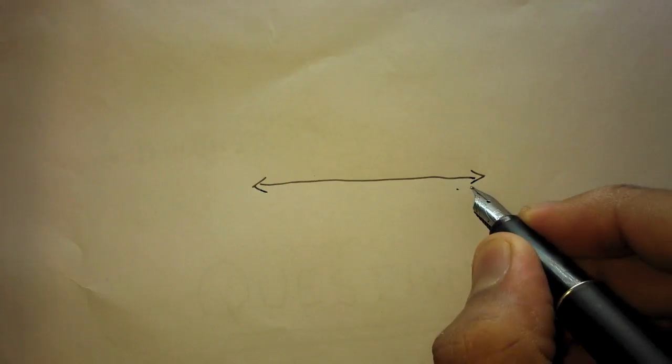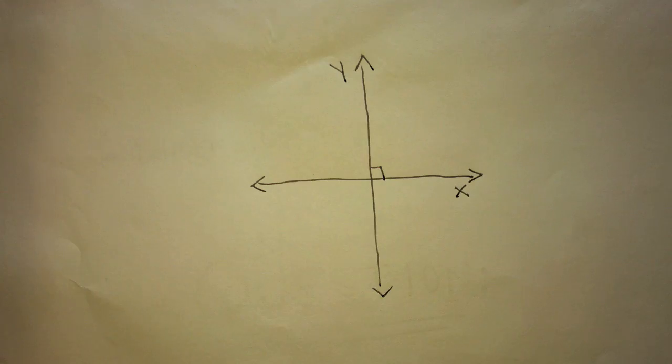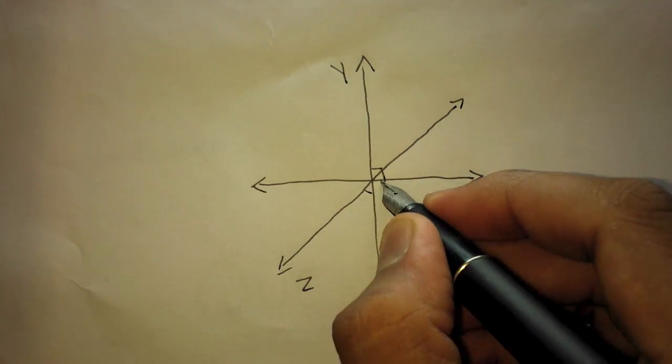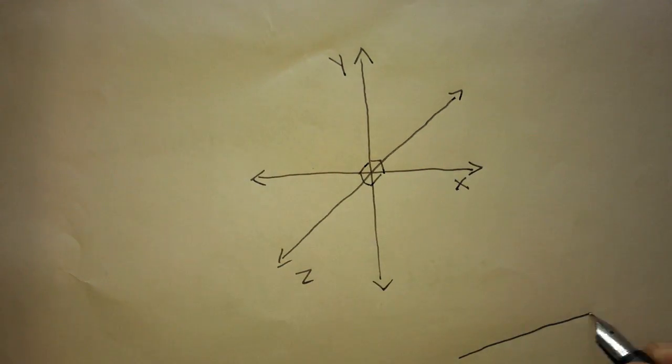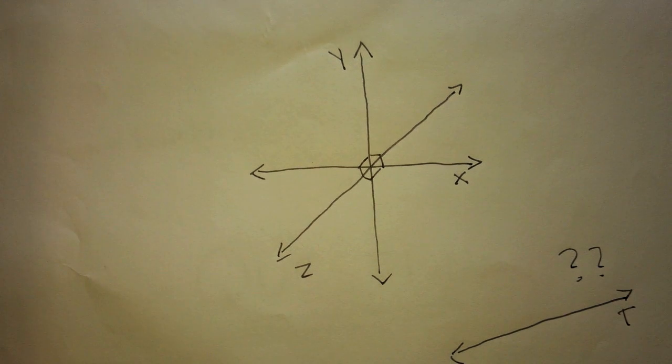So according to my method, this will be the first dimension, perpendicular to it, this will be the second dimension and perpendicular to both of them, this will be the third dimension. We can clearly see there is no space for the fourth dimension. So we can make no line perpendicular to the three of them.